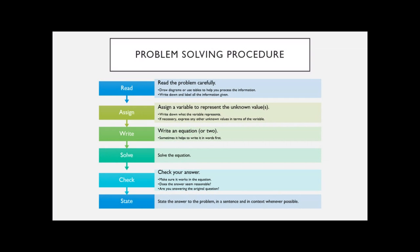This is basically the procedure that I do, and what you should do. Sometimes I'll mix up the first two steps, doing them at the same time. Your first step is to read the problem carefully. When I read the problem, I start drawing pictures, making tables, writing down the information I have, kind of picking the problem apart. Then you assign a variable to represent your unknown value — or if there's more than one unknown, you might use more than one variable — writing down like H equals height so you know what your unknowns are.